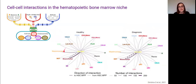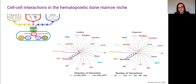We identified over a thousand interactions in both the healthy and the diagnosis samples, and we saw a really similar pattern between the two time points: the majority of interactions involving HSCs were between HSCs and mesenchymal cells, followed by megakaryocytes and then monocytes.